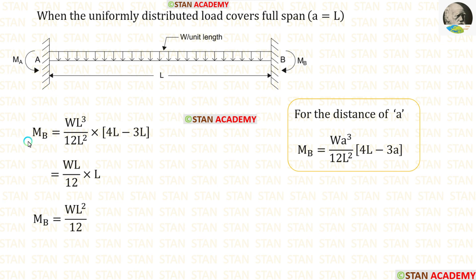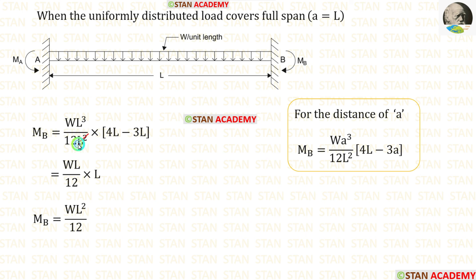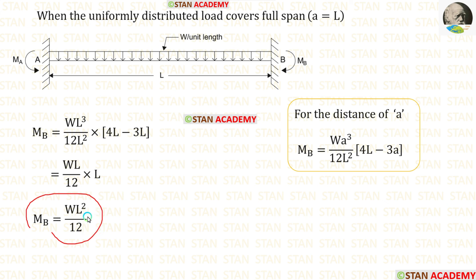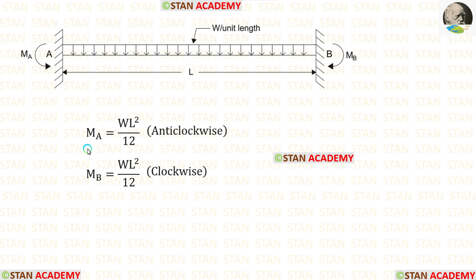Now let us find MB for the full span case by substituting L for A. We eliminate L² and L³. Then 4L minus 3L gives L, and L×L gives L². Finally the formula for MB is WL²/12. We have derived the formulas for fixed end moments MA and MB for a fixed beam carrying UDL over the full span. Thank you for watching this video.